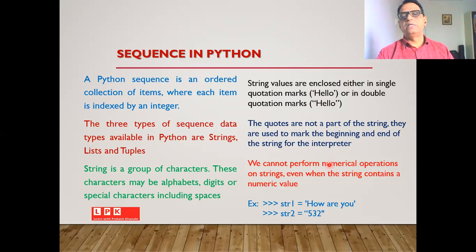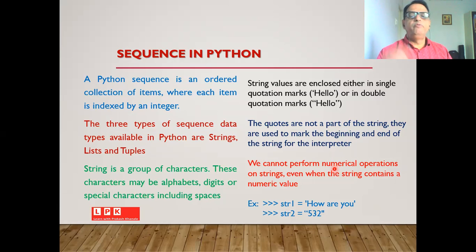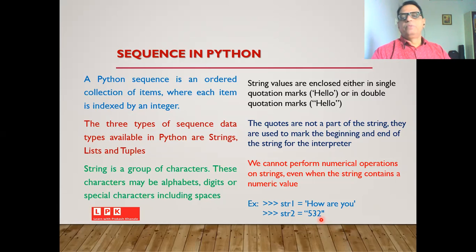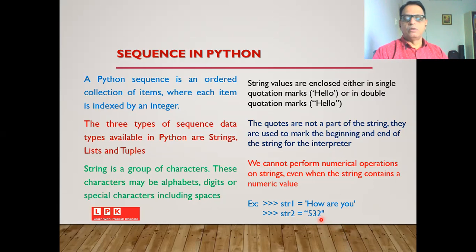As far as strings are concerned, we cannot perform any numerical operations on them. Even if we declare a string as a number — for example, string2 = '532' — it becomes a string, not a number. Therefore it is not possible to perform any numerical operation on strings.